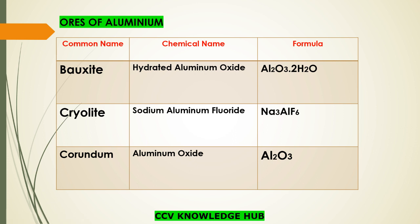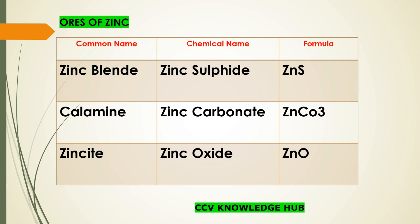First, ores of aluminium. The first one is bauxite — chemical name is hydrated aluminium oxide, formula is Al₂O₃·2H₂O. The second one is cryolite — chemical name is sodium aluminium fluoride, formula is Na₃AlF₆. The next one is corundum — chemical name is aluminium oxide, formula is Al₂O₃.